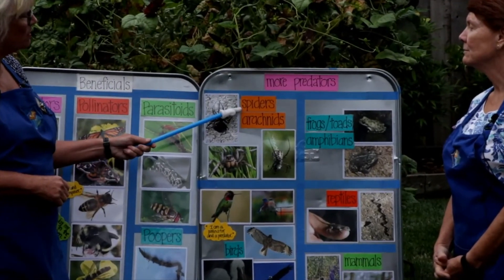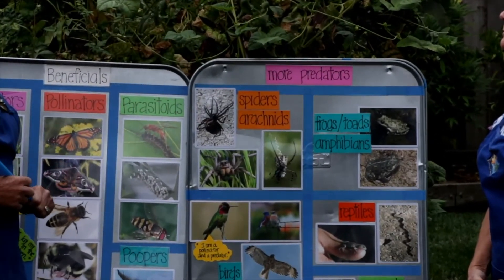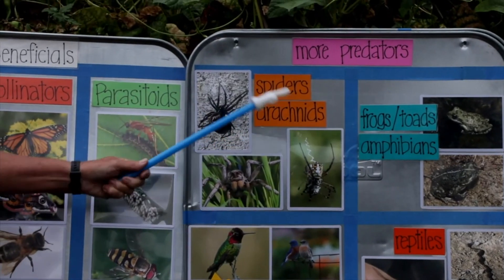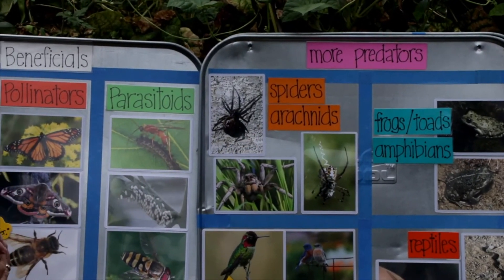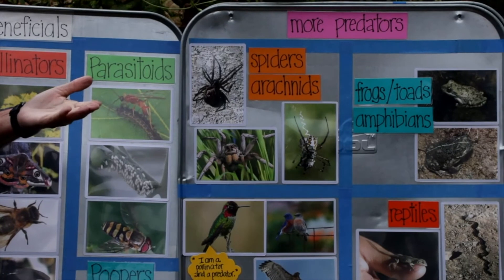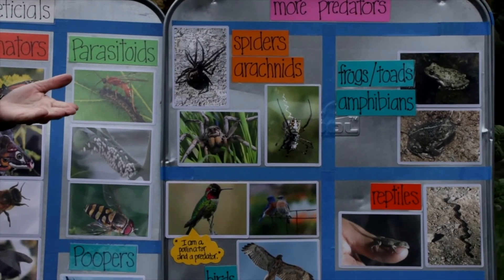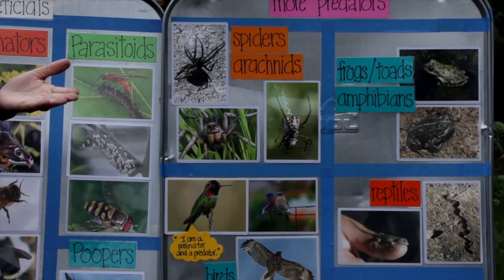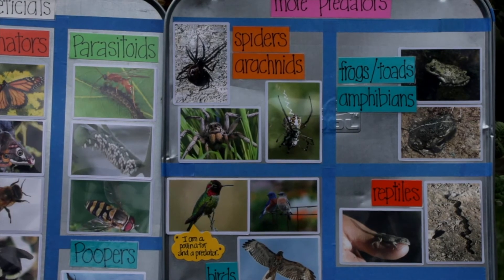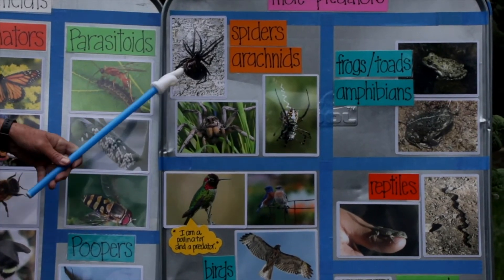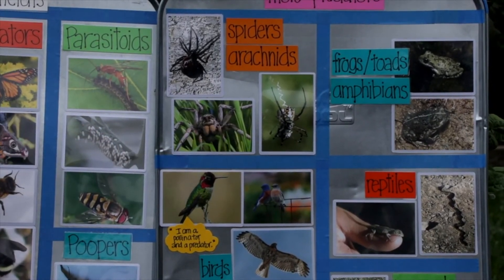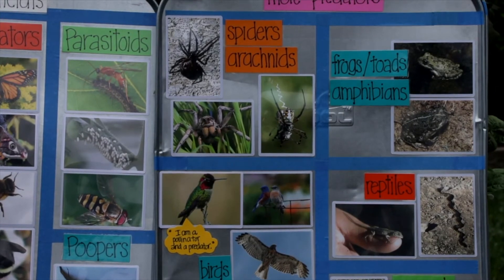In our first category, we have spiders — the fancy name for spiders is arachnids. Spiders can be classified differently from insects very easily by counting the number of legs. All insects have six legs, all spiders have eight legs. There are many different kinds of spiders and they trap and kill insects in different ways.